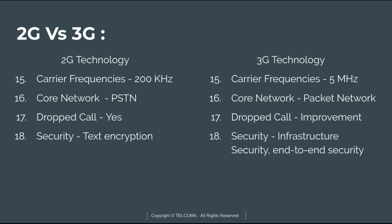In 2G technology there are many dropped calls, whereas in 3G technology there is an improvement in the dropped call service. In 2G technology security is provided over text encryption, whereas in 3G technology security is provided over the infrastructure as well as signaling — that is, end-to-end security.